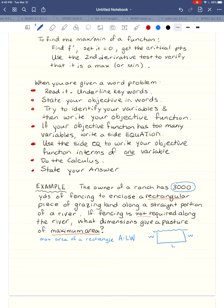So area is length times width. Look at there, my objective function has too many variables. So I'm going to go back and write a side equation that relates those variables to the 3,000 yards of fencing. In my picture, the fencing is only going to go around these three sides. So I'm going to add up those three lengths and set them equal to 3,000. So that says 3,000 is equal to 2W plus L. It looks easy to solve this for L. 3,000 minus 2W is equal to L. I'm going to take that and substitute it into the objective function so that area will only be in terms of W. So I take out the L, put in 3,000 minus 2W times W.